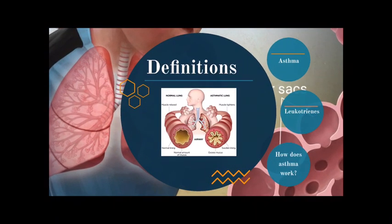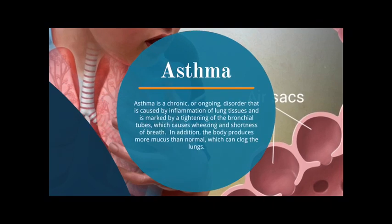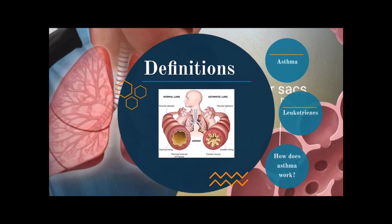First we must know the definitions of asthma and leukotrienes. Asthma is a chronic or ongoing disorder that is caused by inflammation of lung tissues and is marked by tightening of the bronchial tubes, which causes wheezing and shortness of breath. In addition, the body produces more mucus than normal, which can clog the lungs.